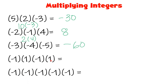In the next example, counting the negative signs gives us 2 — an even number — so the answer will be positive. 1 times 1 times 1 times 1 gives 1, and it will be positive 1. For the last one, counting the negative signs: 1, 2, 3, 4, 5 — there are 5 negative signs, and 5 is an odd number, so the answer must be negative. Multiplying 1 to itself gives 1, so the answer is negative 1.